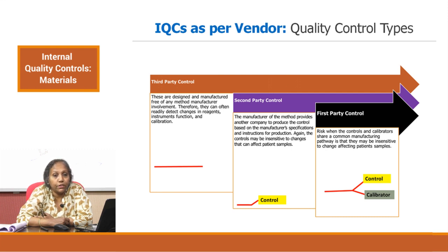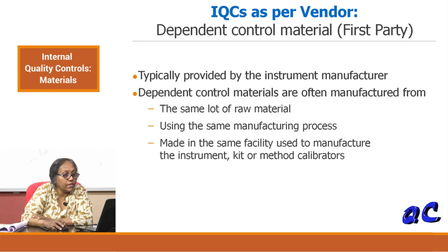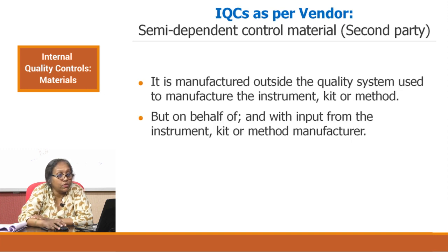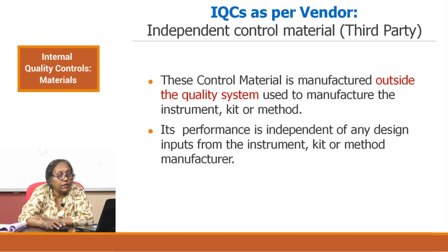Another classification of controls is as per vendor: first party, second party, or third party controls. First party controls, also called dependent control materials, are typically provided by the instrument manufacturer. They are often manufactured from the same raw material lot, using the same manufacturing process, and made in the same facility used to manufacture the instrument kit or method calibrators. Second party controls, or semi-dependent controls, are manufactured outside the quality system used to make the instrument kit or method, but are manufactured on behalf of or with the input of the instrument or method manufacturer. Third party controls, or independent control materials, are manufactured entirely outside the quality system of the instrument kit or method manufacturer.